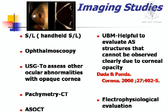For imaging studies, slit lamp biomicroscopy is the common one, best conducted for children using a handheld slit lamp microscope. Ophthalmoscopy and ultrasonography are done to assess ocular abnormality in the presence of opaque cornea. Pachymetry is performed to know the corneal thickness, and anterior segment OCT is done for anterior segment evaluation as a whole. Ultrasound biomicroscopy is helpful to evaluate the anterior segment in the presence of opaque cornea. Electrophysiological evaluation is done to give prognosis to the patient.